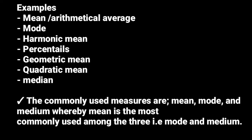The commonly used measures of central tendency are mean, mode, and median, whereby mean is the most commonly used among the three, followed by mode, and then median. These are what we shall be looking at in our next videos.